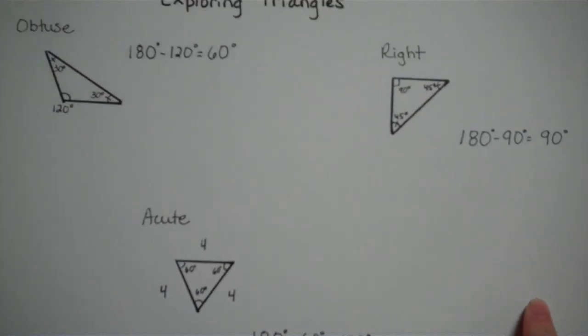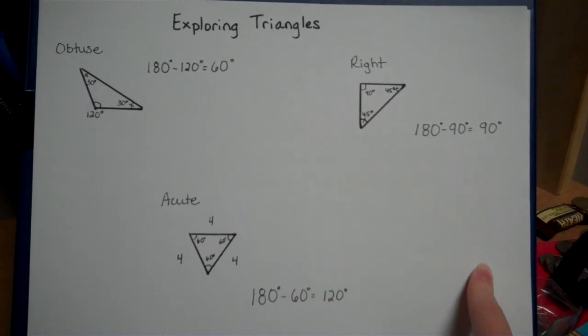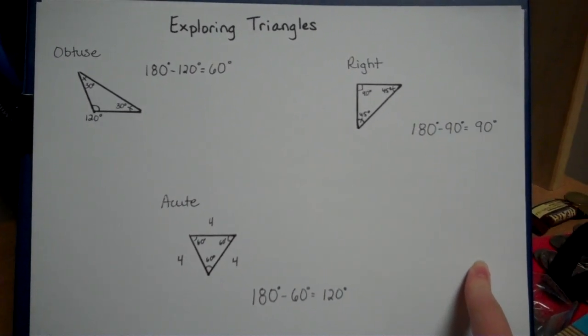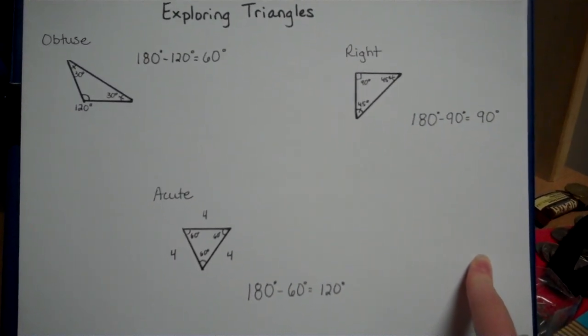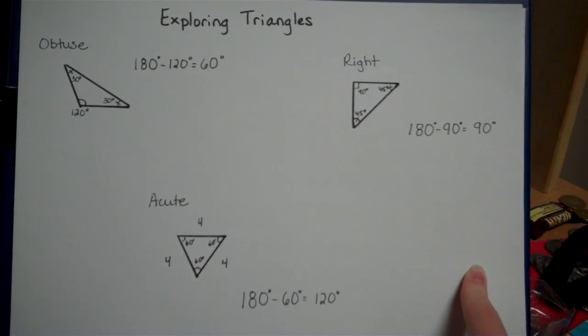So essentially, you need to always remember that the angles in a triangle need to add up to 180 degrees. As we continue to explore and learn about triangles, you will also begin to see a correlation between the angles and their specific degrees, and the length of their opposite sides.